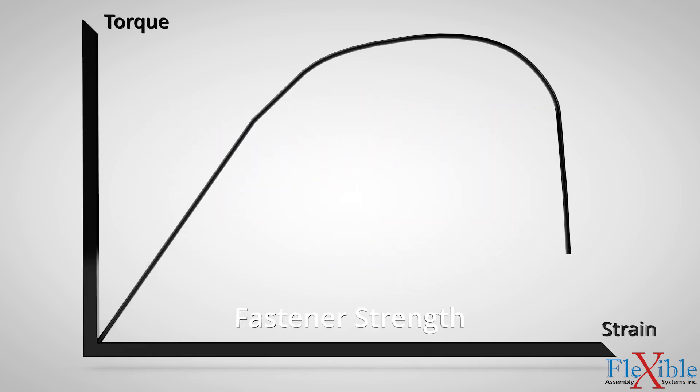Here is a graph where the black line represents fastener's strength. Torque, or stress, is represented on the y-axis, while strain is on the x-axis. As stress and strain increase, the fastener will eventually reach a limit and fracture.